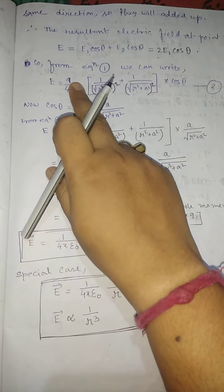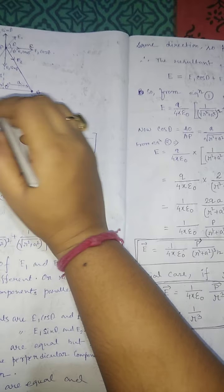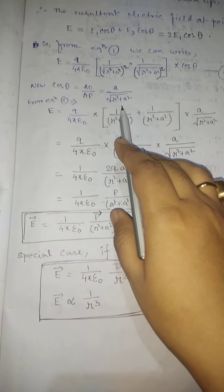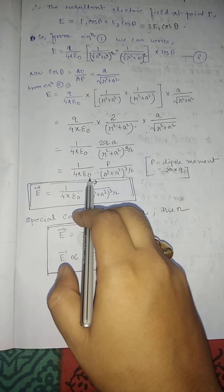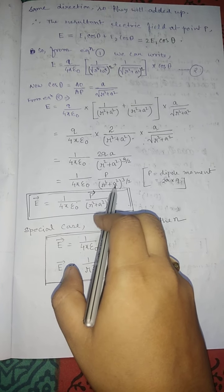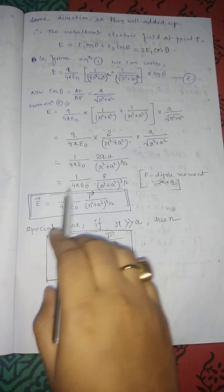Substituting E1 and cosθ: cosθ = OA/AP = a / √(r² + a²). After calculation we get E = (1/4πε₀) × p / (r² + a²)^(3/2), where p = 2a × q is the dipole moment.